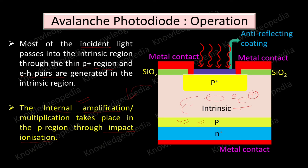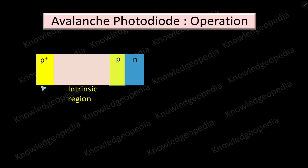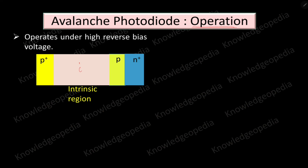By rotating the diagram anti-clockwise by 90 degrees, we can draw the structure showing the p-plus region, intrinsic region, p region, and n-plus region. This avalanche photodiode operates under high reverse bias — generally photodiodes operate under reverse bias, but here the bias applied is relatively higher compared to other photodiodes.